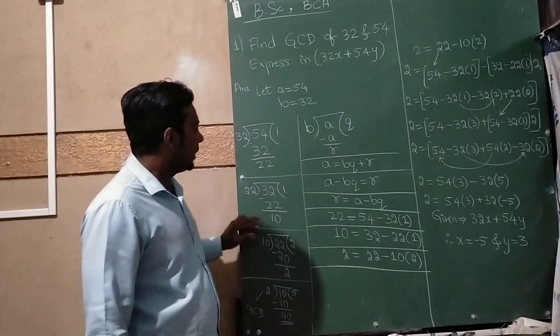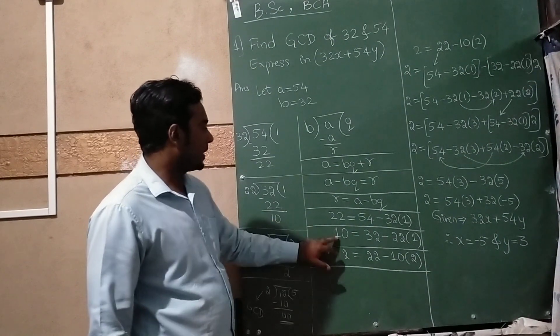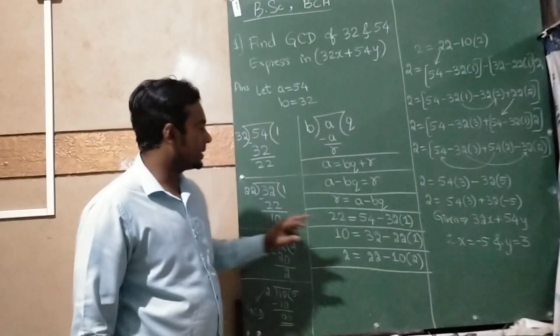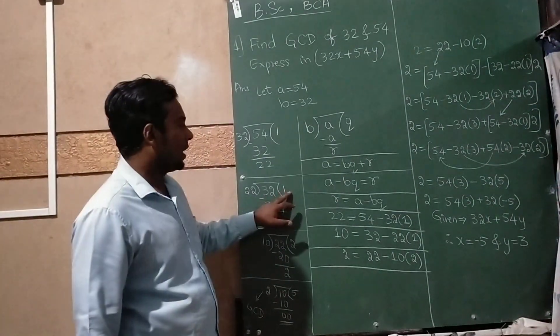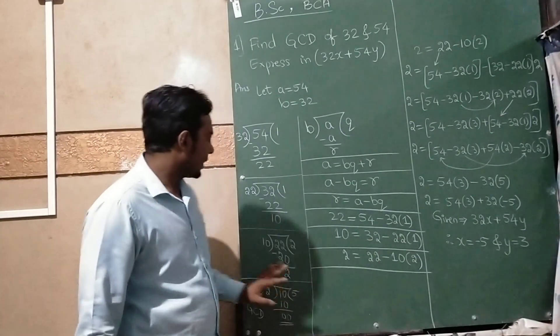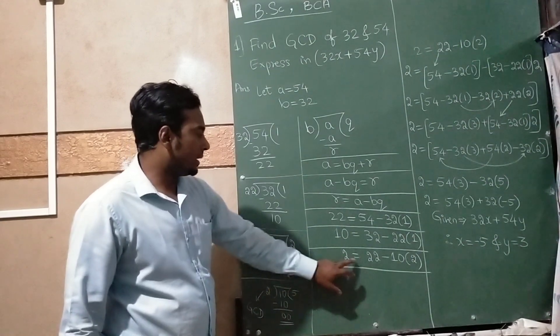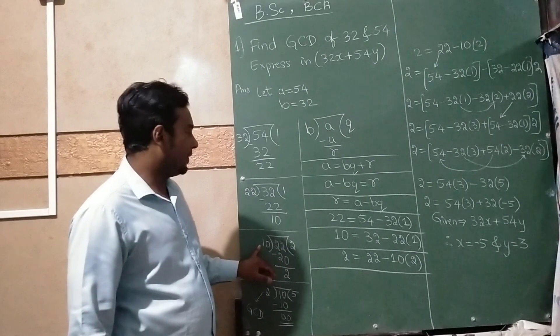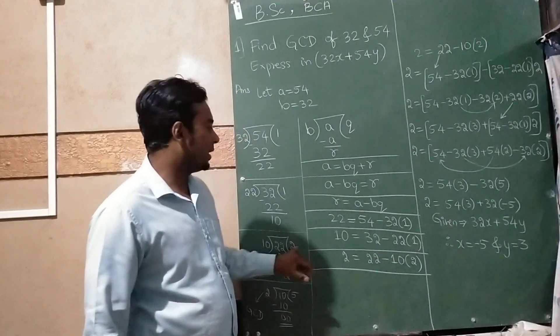The next remainder is 10 equals 32 minus 22 times 1. Then 2 is the remainder equals 22 minus 10 times 2.